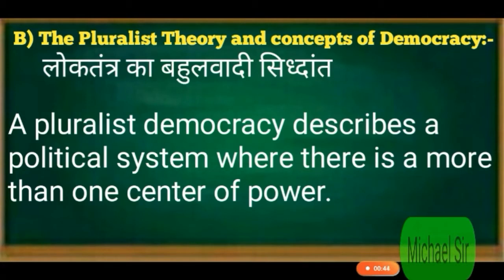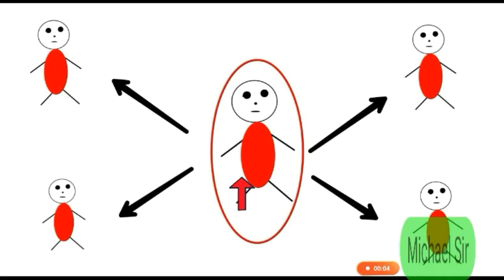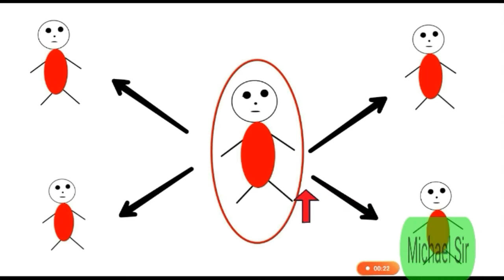Definition: A pluralist democracy describes a political system where there is more than one center of power. My dear students, power should not be in the hands of one person — this power should be distributed among others. I am trying to explain to you that this power should be distributed rather than concentrated in one person's hands.